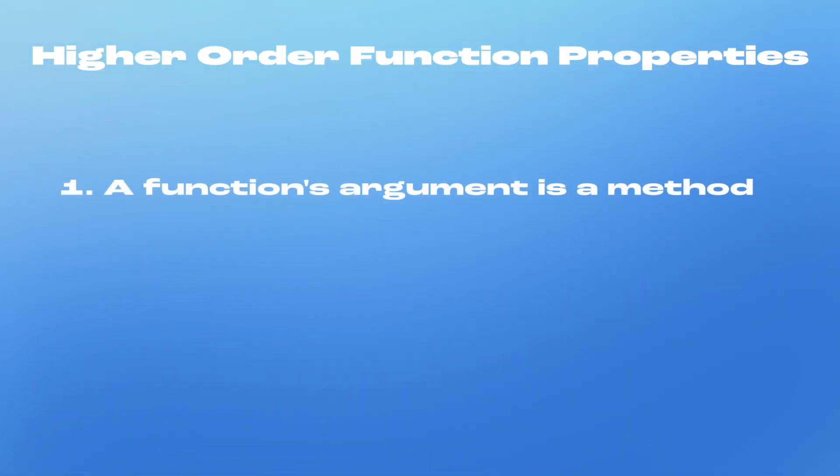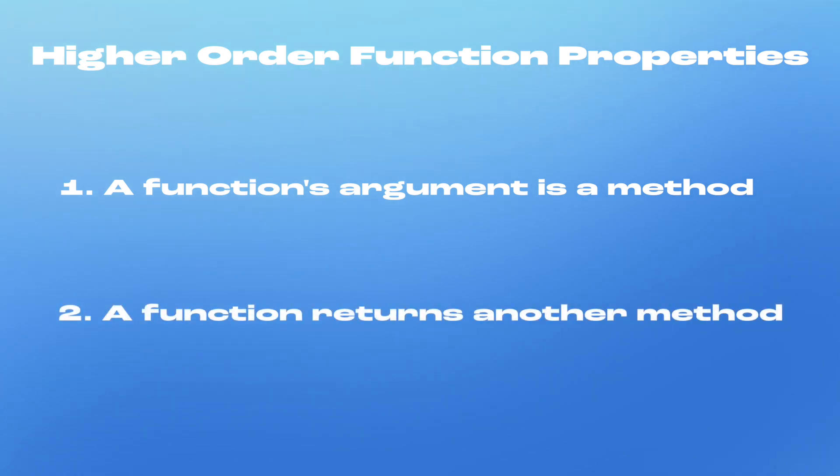A function that's classified to be higher order has at least one of the two following properties. The first property is when a function takes in another function as one of its arguments. And the second property is when that function can return another function. Higher order functions aim to abstract away as much logic as possible, which is a great approach to reducing repetitive code in your applications.